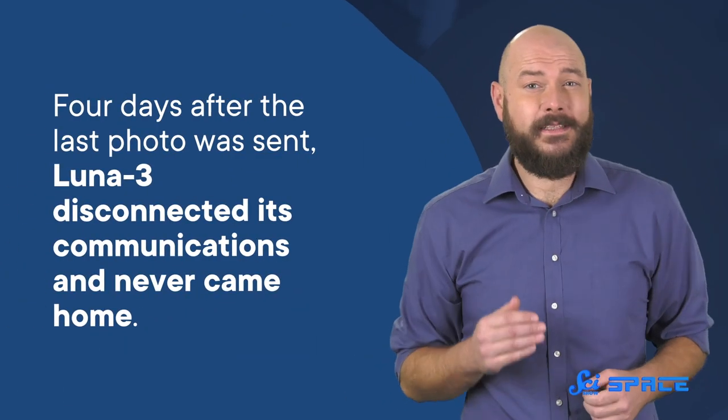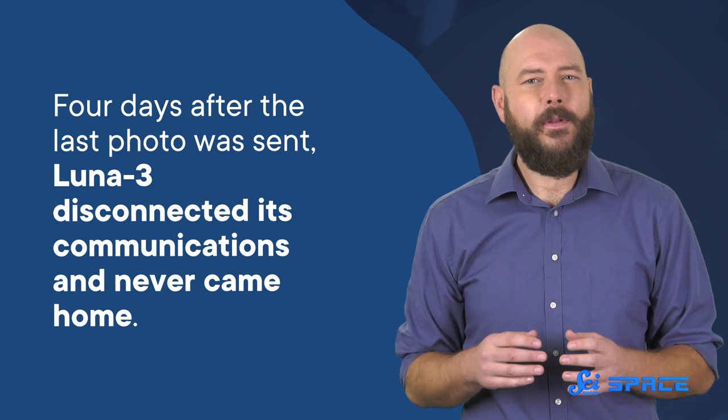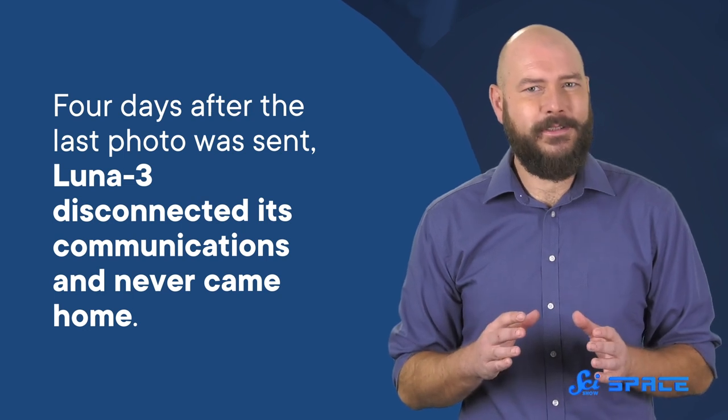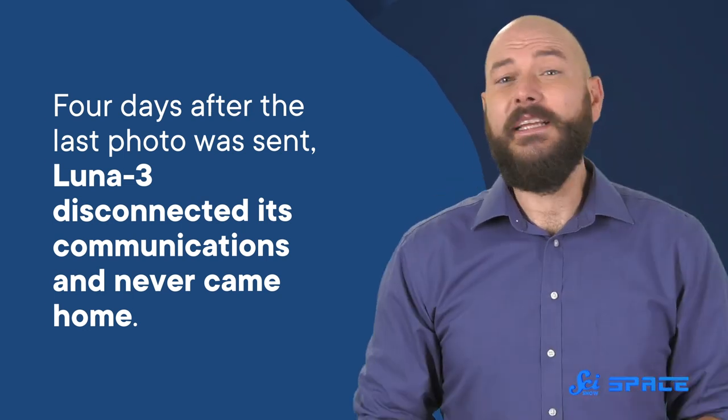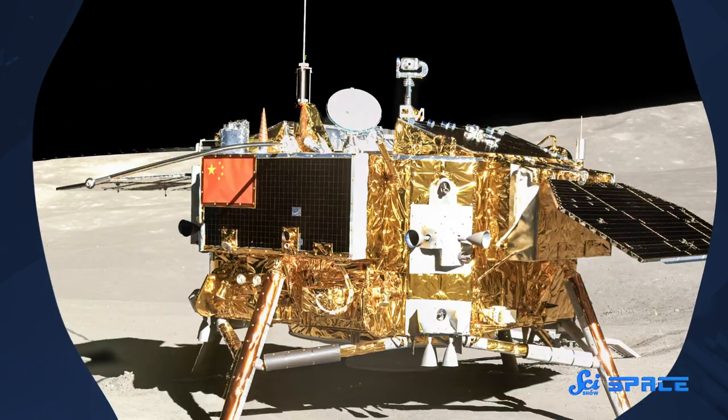But the Moon isn't the only mystery here. Four days after the last photo was sent, Luna 3 disconnected its communications and never came home. Its fate is still unknown, but there are a few ideas about what happened to it. It might have burned up in an attempt to re-enter Earth's atmosphere. Or maybe it stayed in orbit and flew in circles around Earth for another two years. So Luna 3 joins the list of Moon-related mysteries.